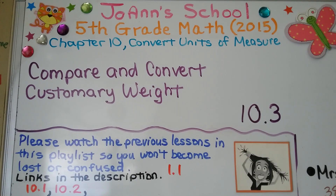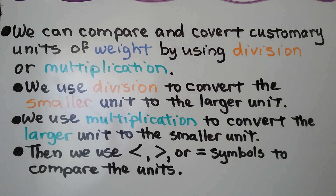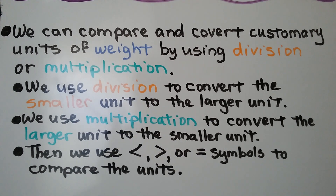Lesson 10.3: Compare and Convert Customary Weight. We can compare and convert customary units of weight by using division or multiplication. We use division to convert the smaller unit to the larger unit, and multiplication to convert the larger unit to the smaller unit. Then we use less than, greater than, or equal to symbols to compare the units.